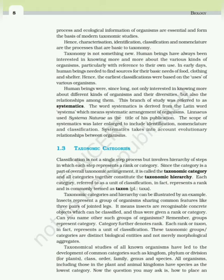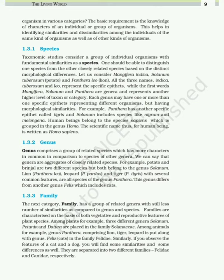Taxonomical studies of all known organisms have led to the development of common categories such as kingdom, phylum or division (for plants), class, order, family, genus and species. All organisms, including those in the plant and animal kingdoms, have species as the lowest category. The basic requirement for placing an organism in various categories is the knowledge of characters of an individual or group of organisms, which helps in identifying similarities and dissimilarities.